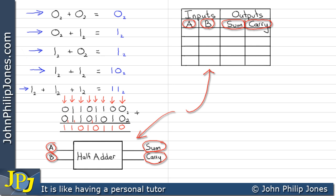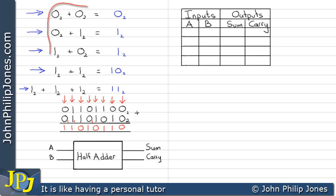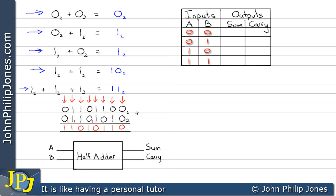The outputs in the schematic diagram include an output for the sum and an output for the carry, which we can also show in the truth table. We need to consider all possible input combinations at A and B. A can be zero when B is zero, zero when B is one, one when B is zero, and finally both can be one.